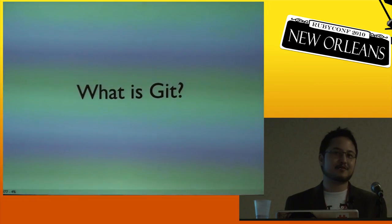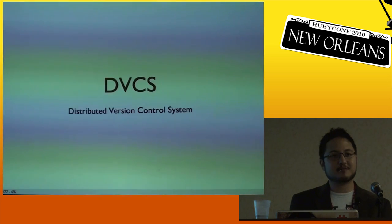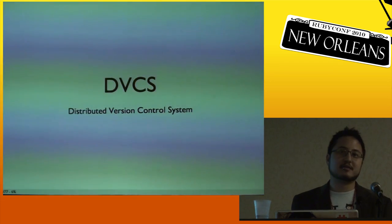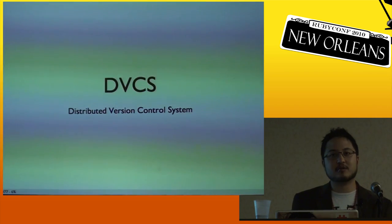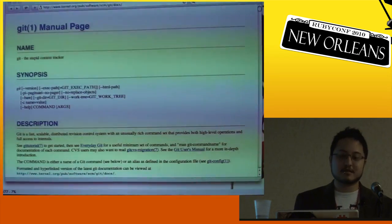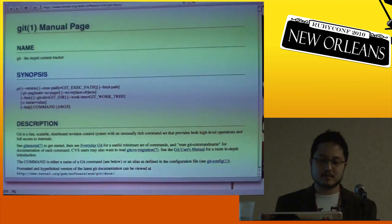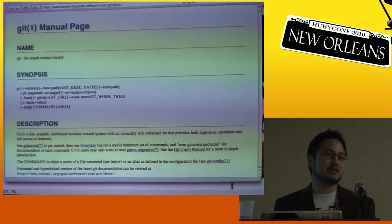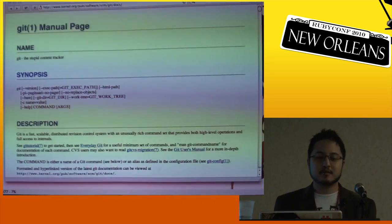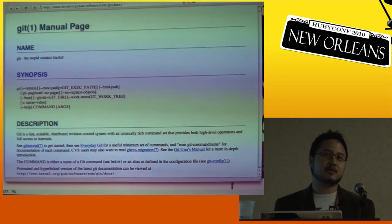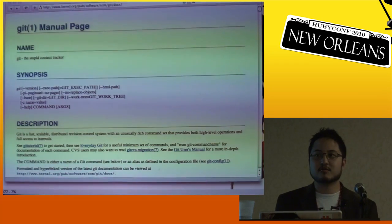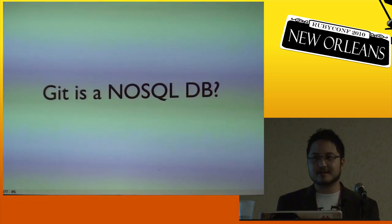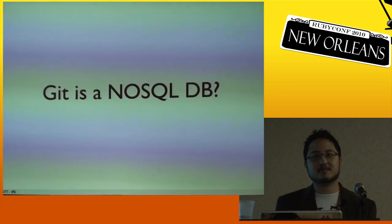So what is Git? I assume everyone here knows what Git is. Git is basically a distributed version control system. I'm not going to go into how most people use Git for versioning their source code. At GitHub, we use Git more as a database. If you look at the man page for Git, they call it the stupid content tracker. And reading this, it struck me as odd because everyone uses Git the same way — as a source control tool. But really, it's just a generic tool for storing data, storing revision data that just happens to be good for storing source code.